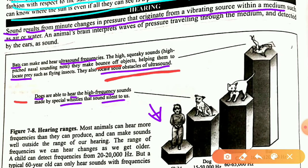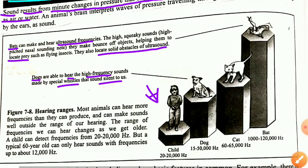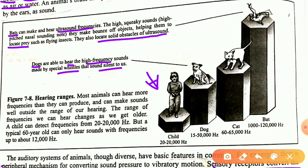Dogs also listen to high frequency sound — for example, special whistles that they understand. Here are some hearing ranges: humans (children) 20 to 20,000 Hz; dogs 15 to 50,000 Hz; cats 60 to 65,000 Hz; and bats 1,000 to 120,000 Hz.